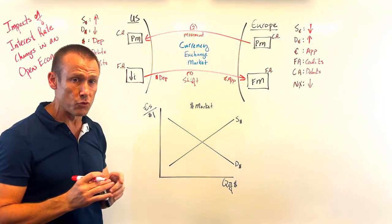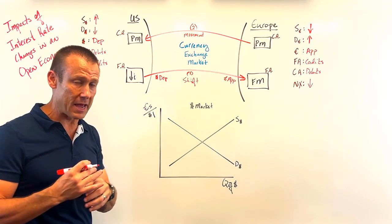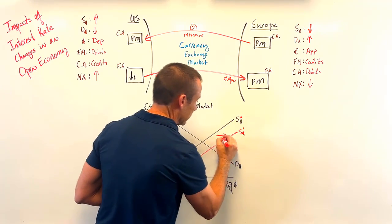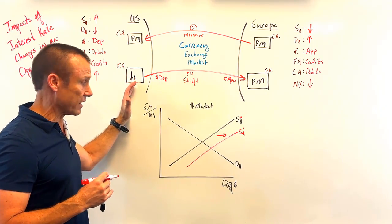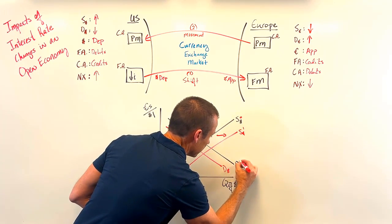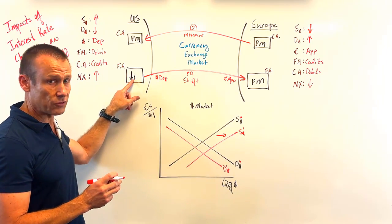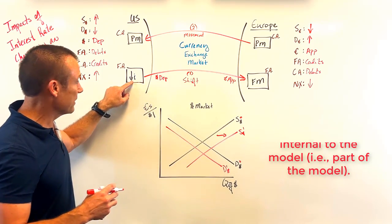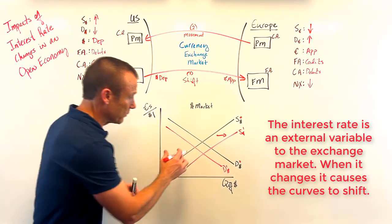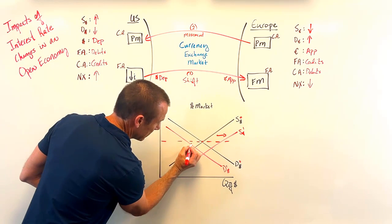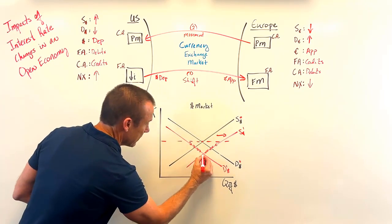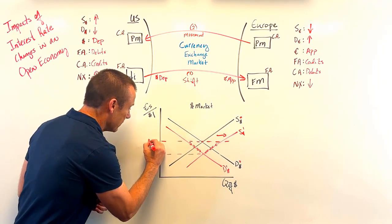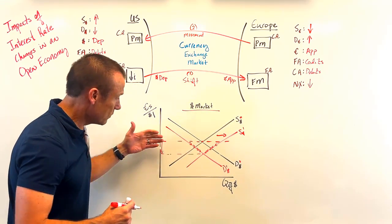Now let me focus on this shift-and-movement concept. That interest rate went down, so Americans wanted to take their money toward Europe — we get an increase in the supply of dollars, and Europeans don't want to come here with their savings, so they demand fewer dollars. These shifts are responses to the change in the interest rate. The exchange rate is the endogenous variable — when it changes, we move along the line, not shift it. The interest rate is outside the model and causes the shifts. With an increase in supply and decrease in demand, we get a surplus of dollars, and that's why the dollar depreciates.